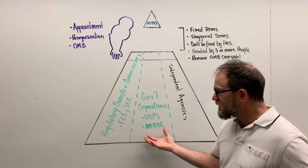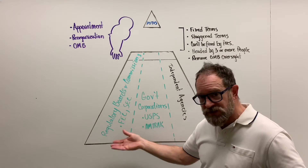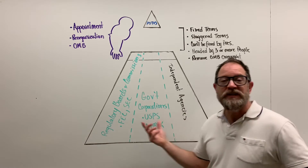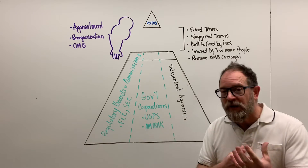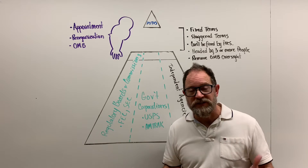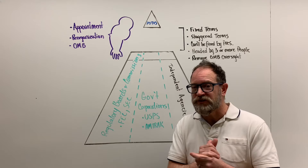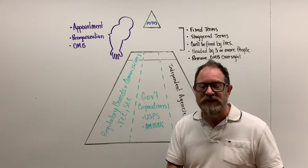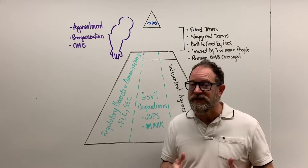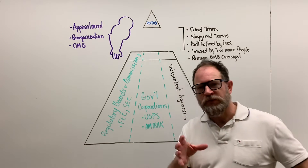Government corporations and regulatory boards and commissions are on this face of the pyramid, and some independent agencies operate on both faces. For example, the Food and Drug Administration is still part of the Health and Human Services Executive Department, but it is also designed to regulate the food industry and be free from presidential control.